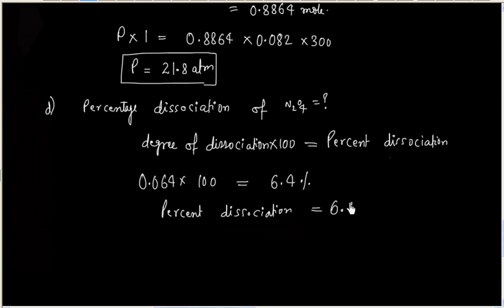This is a straightforward problem if you follow the methodology: first write the reaction table, then equate concentrations with the Kc expression, then calculate Kc, concentration at equilibrium, and total pressure.